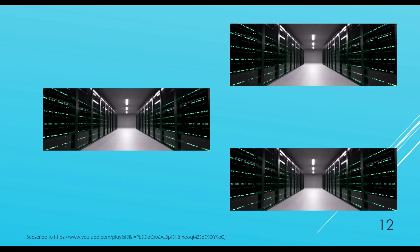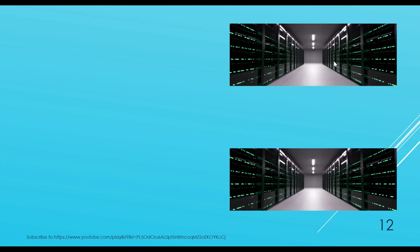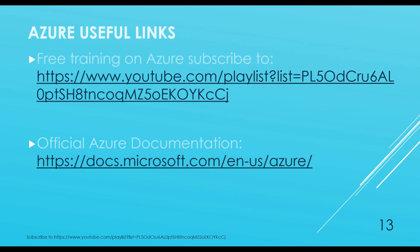Looking at this graph, we have three regions — Region 1, 2, and 3 — which are all interconnected, part of a single geography, and part of the region pairs. If one region goes down due to an outage, your data is still accessible from either of the other two regions. That is the advantage of having region pairs — your data is safe and can be accessed from anywhere, achieving business continuity and disaster recovery.